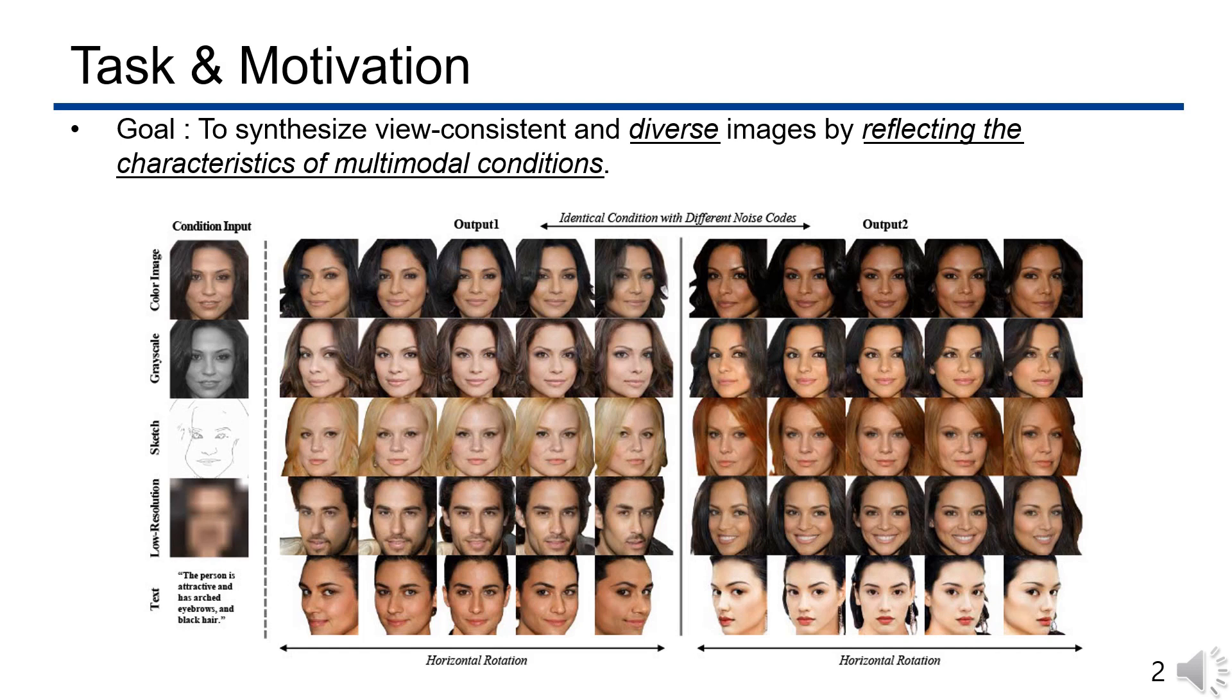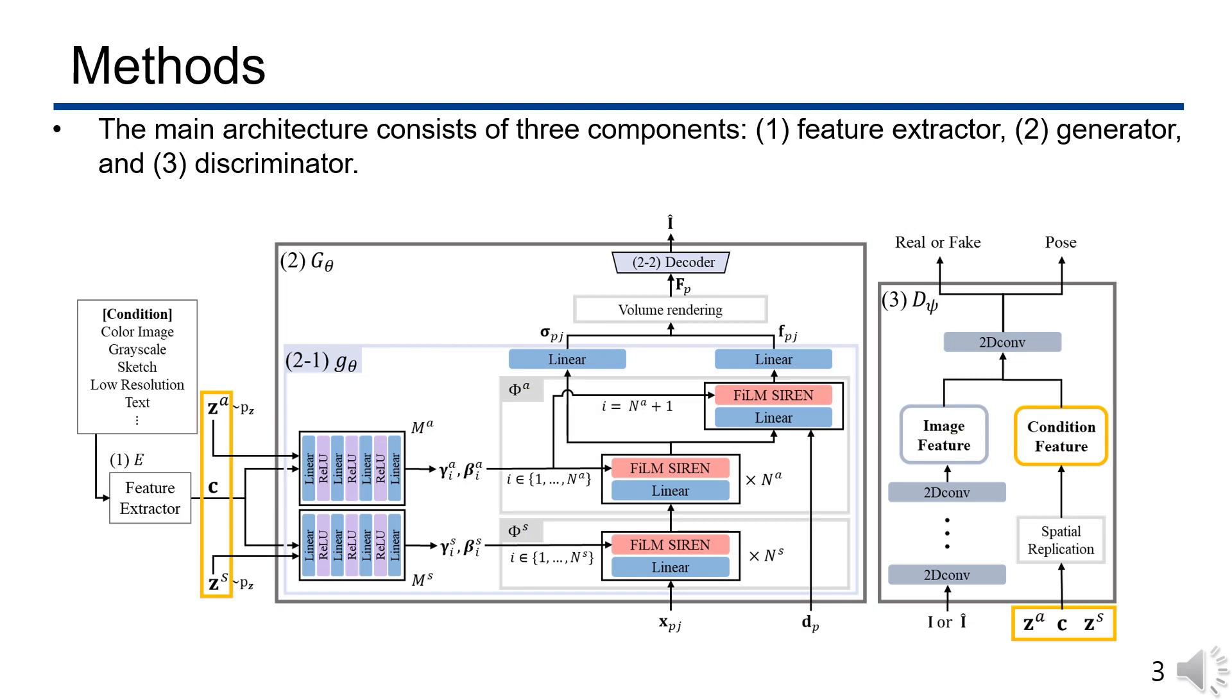In this paper, we propose a novel approach called the Conditional Generative Neural Radiance Fields, which generates multi-view images that reflect multi-modal input conditions. Our goal is to synthesize view-consistent and diverse images by reflecting the characteristics of multi-modal conditions. We design a model that can generate diverse images with different fine details, sharing the coarse characteristics of condition inputs.